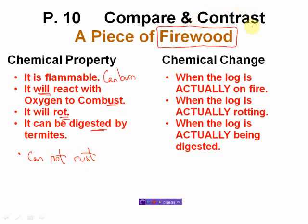Now, on the other hand, what is the actual change? Let's talk about how we're going to change this thing. When the log is actually on fire, it is burning. When the log is actually rotting, that is different than it will rot or it can rot. When the log is actually being digested, it's in the process of it. So, a change talks about the change happening. The property describes how it can happen. Not that it is happening. Just definitely a night and day of something that can happen or something that is happening.